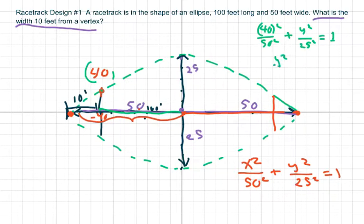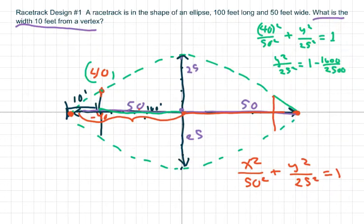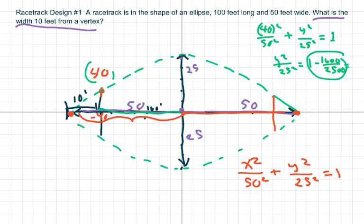So to solve for y, I'm going to do y squared over 25 squared equals 1 minus 1600 over 2500. So this whole thing, if you reduce this, that's going to equal 9 over 25.